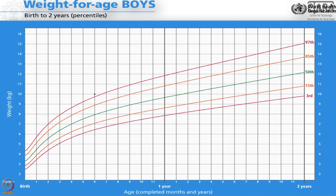This is the WHO weight-for-age percentile chart for boys. I plotted this six-month-old child at 10 kg — look where he is: above the 97th percentile. Only 3% of children should come above this line. As I mentioned, in India we have approximately 32% of children — one third — below the 3rd percentile. That's what we need to change.